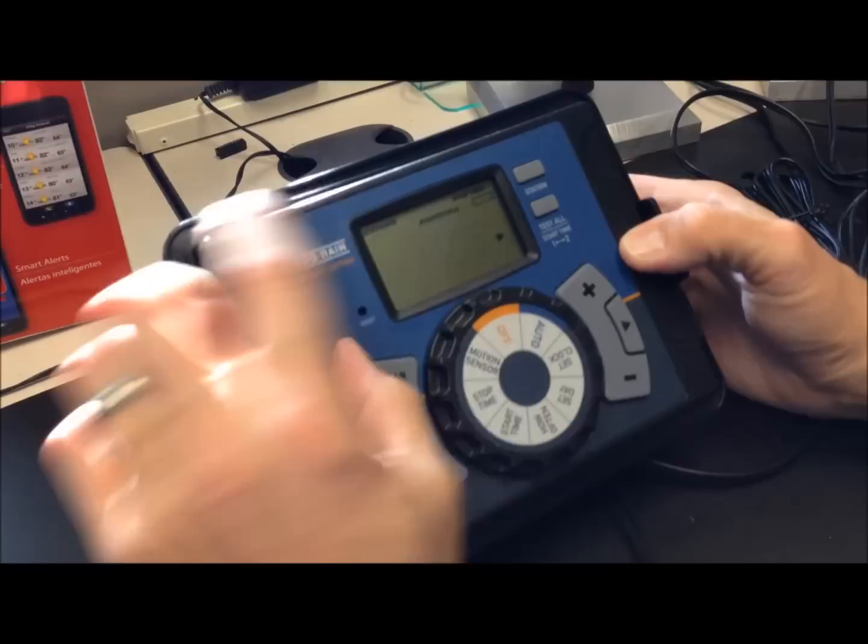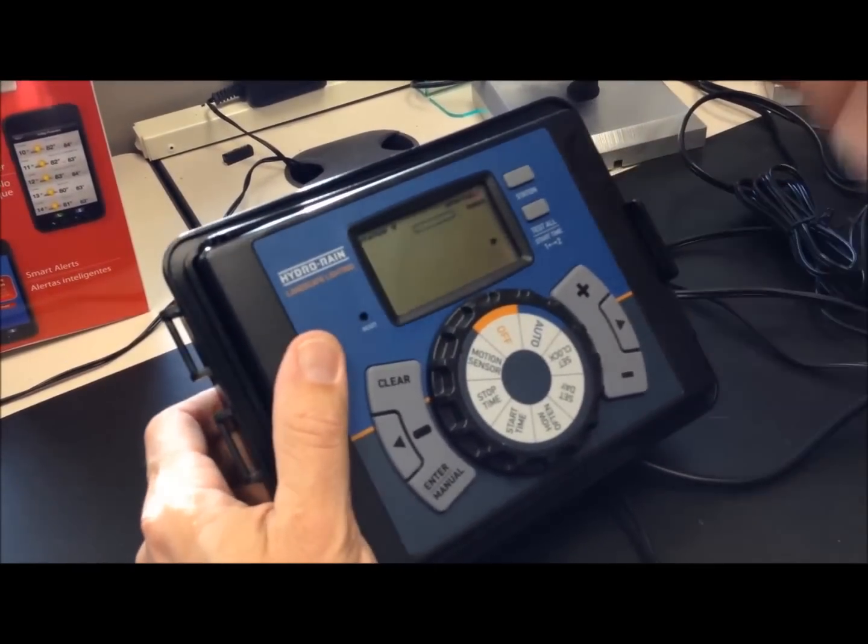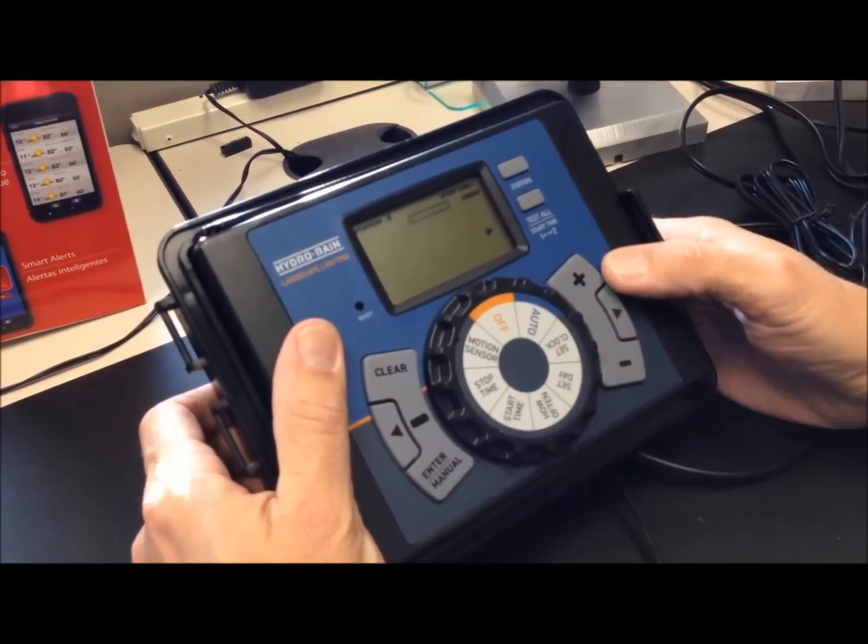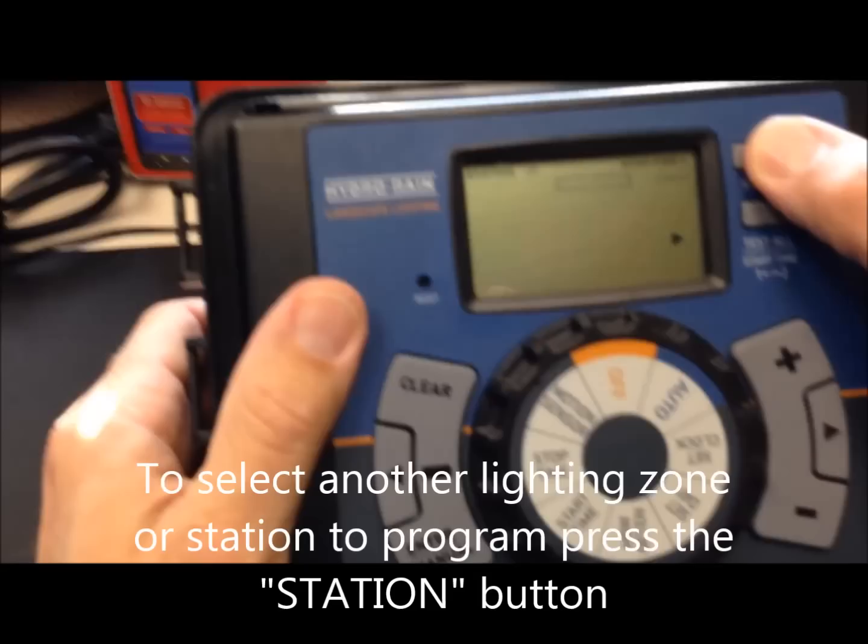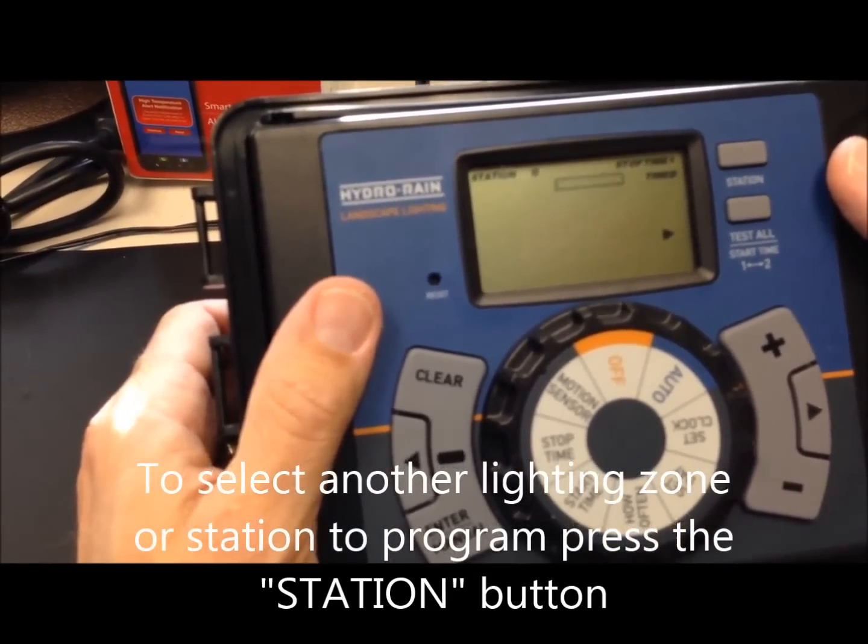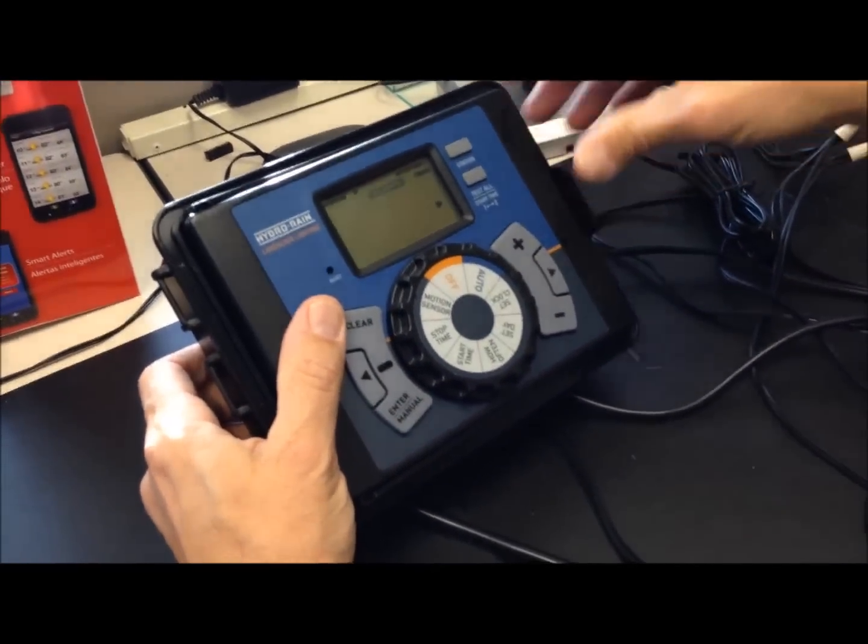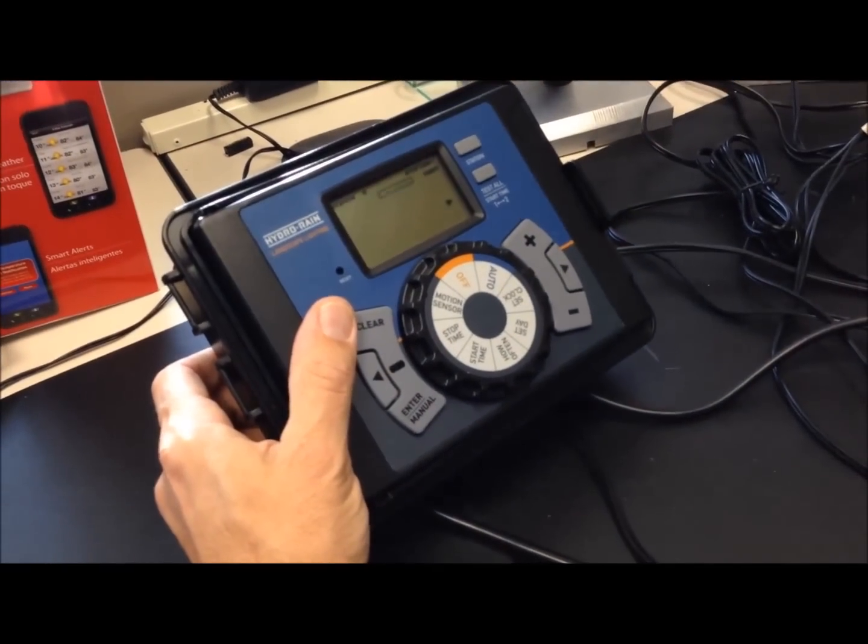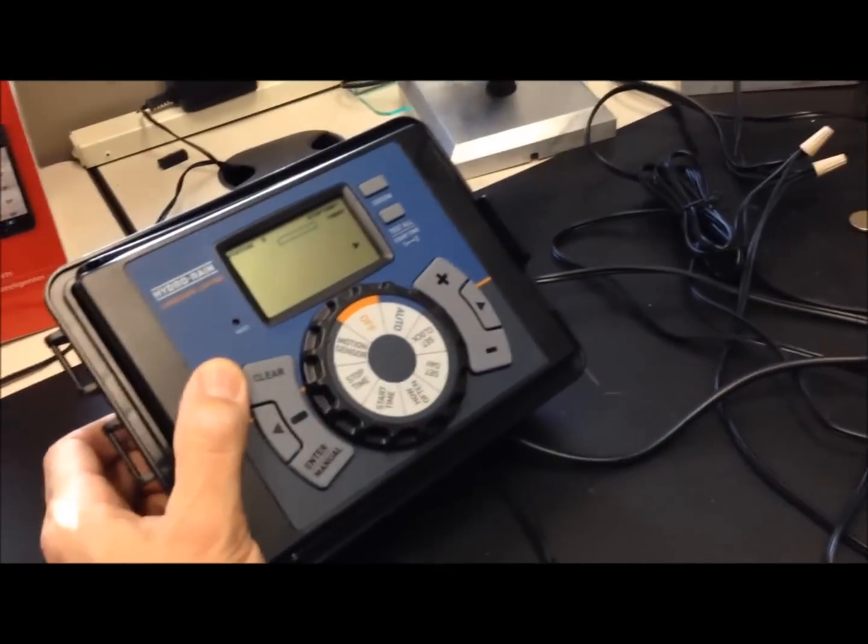Now that's for station one. I can go in, hit the station button, and go in and do station two, just like I did for station one. And then station three. There's no problem if you put all your lights on one station. The advantage of multiple stations is that I can dedicate one of them to our optional motion sensor.